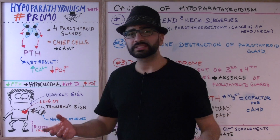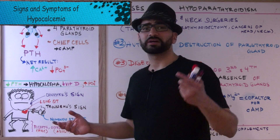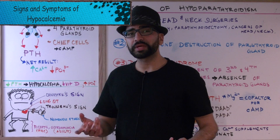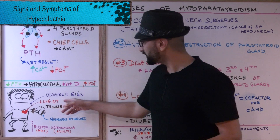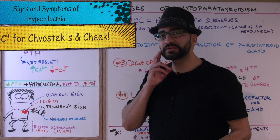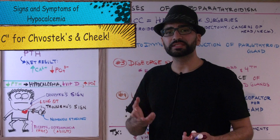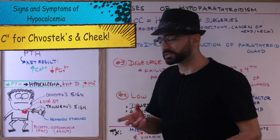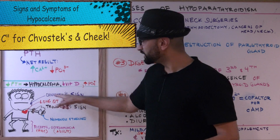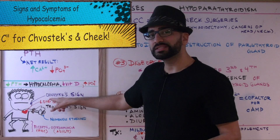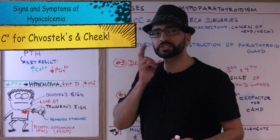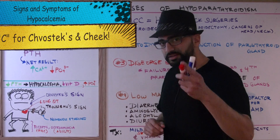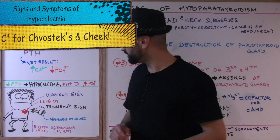Let's start talking about the signs and symptoms of hypocalcemia. The first is the Chvostek sign — tapping of the facial nerve is going to elicit contraction of the facial muscles. How do you remember that? Chvostek starts with the letter C — think about the cheeks. When you tap the cheeks, cheeks also starts with the letter C.